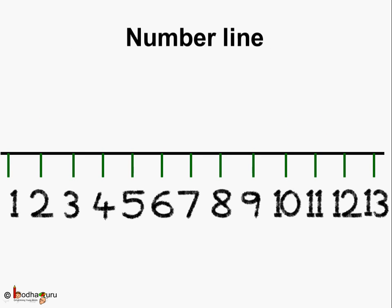So, now you know what is a number line. Here, the numbers are written from the smallest to the greatest number. And, they are placed at equal distance. Okay?